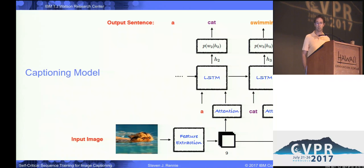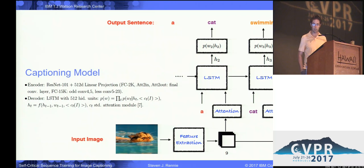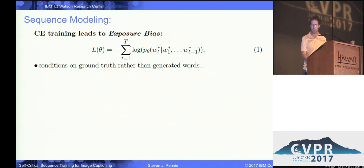The technique I'm going to discuss is agnostic to the specific model used, but just to get it out of the way, we use the standard captioning model — specifically ResNet to generate image features, and then an LSTM decoder that we have attention optionally on as input to the LSTM, and optionally on as input to the posterior word generator.